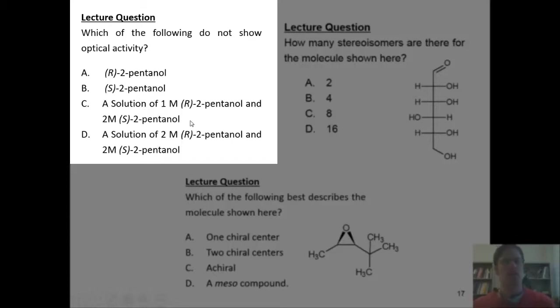In option C, we're talking about a solution of one molar R-2-pentanol and two molar S-2-pentanol mixed together. Those are two enantiomers of each other, but in this case, I've got more of one, that is a higher concentration of S-2-pentanol, than I have of the other. Because that's the case, the excess amount of S-2-pentanol will induce an optical rotation. So A, B, and C are all optically active scenarios.